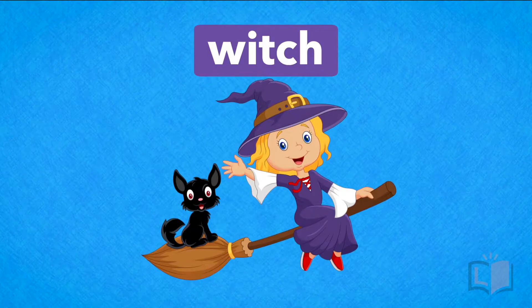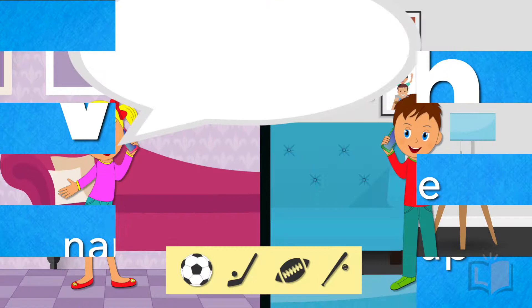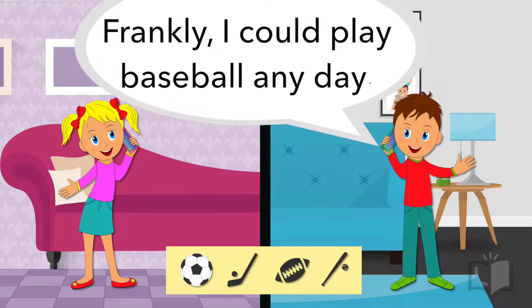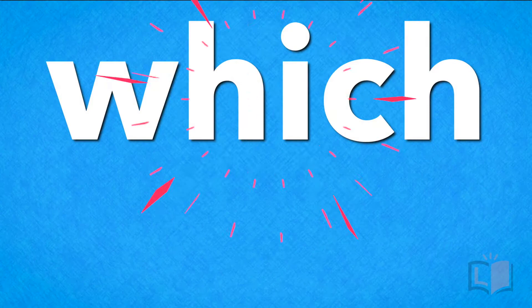This 'which' asks for one to be named from a group. Which sport do you like to play? Frankly, I could play baseball any day. The girl is asking the boy which sport he likes to play. She wants him to name one sport from the group of many other sports, like soccer, hockey, football, and baseball. Remember, 'which' asks for one or more people or things to be named from a group.